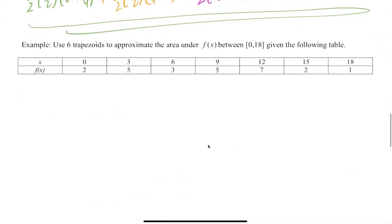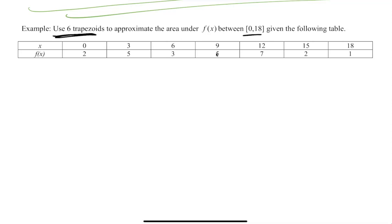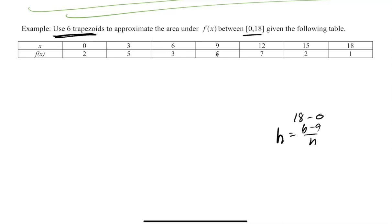One last example — this one has no formula and no graph. All they give you is a table of values. This is actually what IB tends to use the most, and honestly it's my favorite. They want 6 trapezoids from 0 to 18. So first find the height: h = (b − a)/n = (18 − 0)/6 = 3.